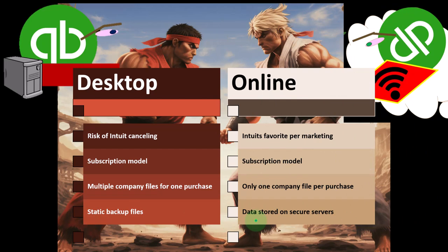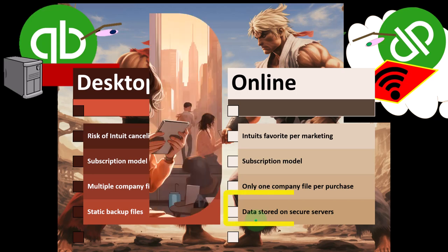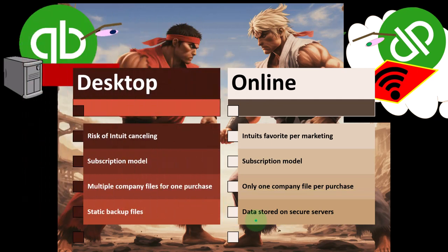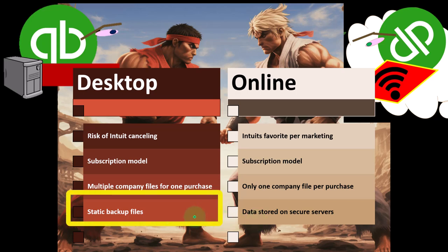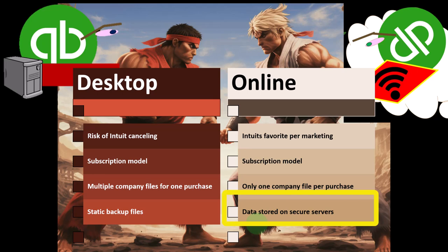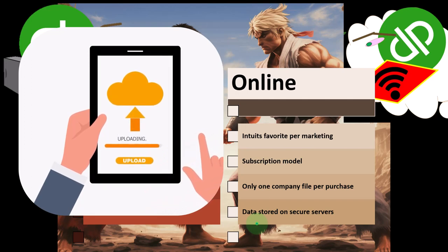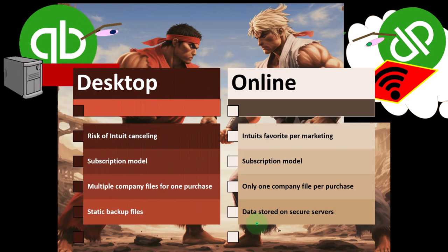QuickBooks Online is always real-time. The Advanced version does have a system where you can restore data to a prior point, which is great, and other software can do something similar. But even that isn't as versatile as a static backup, because restoring to a prior point changes your one file — it's hard to go back and forth between a prior point and the current point. With the desktop, you have two separate files you can open independently, which feels much safer.